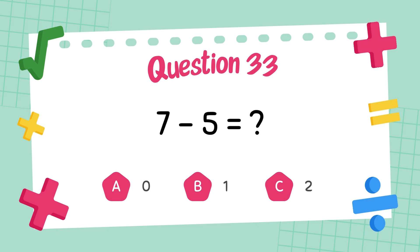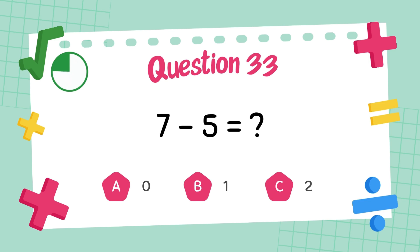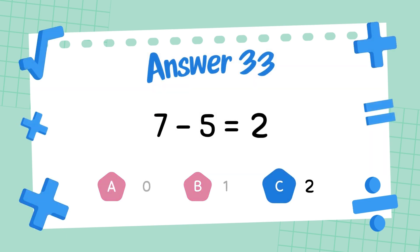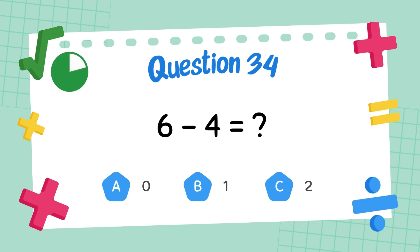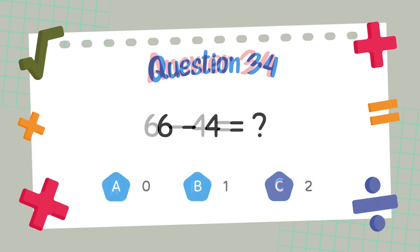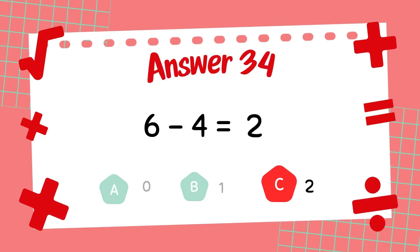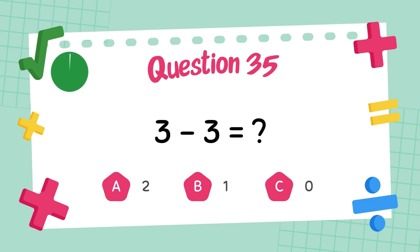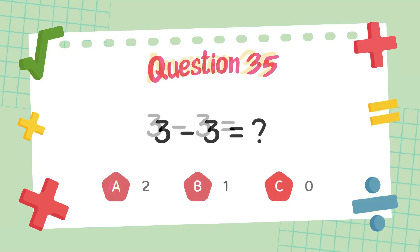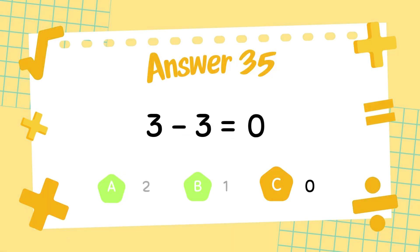What is 7 minus 5? The answer is 2. What is 6 minus 4? What is 6 minus 3? The answer is 0.